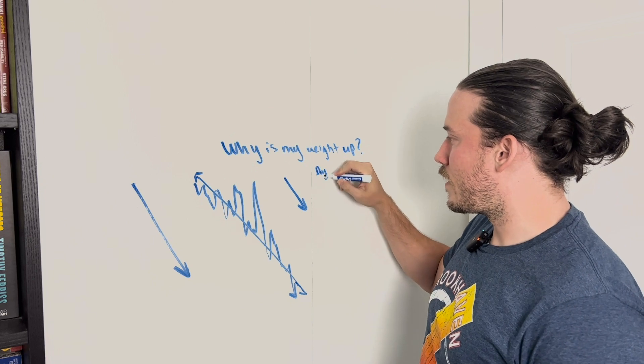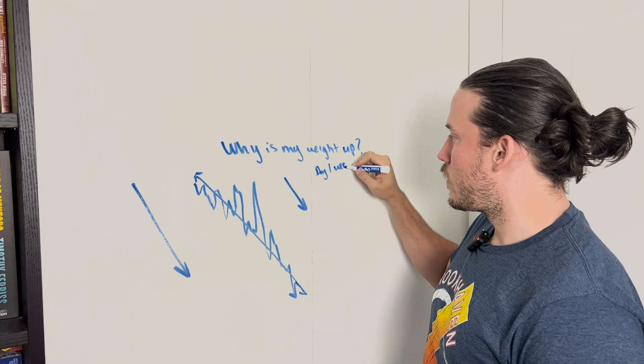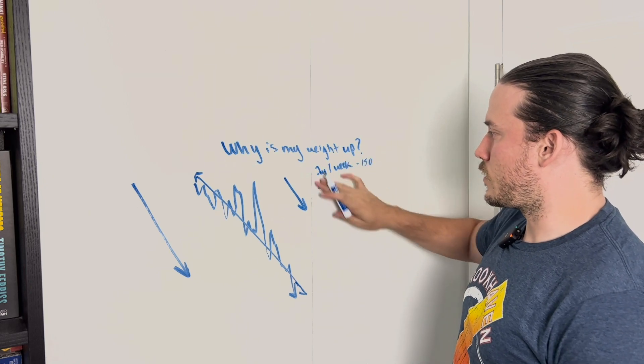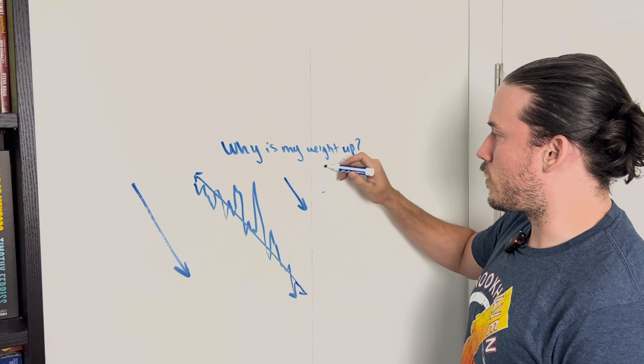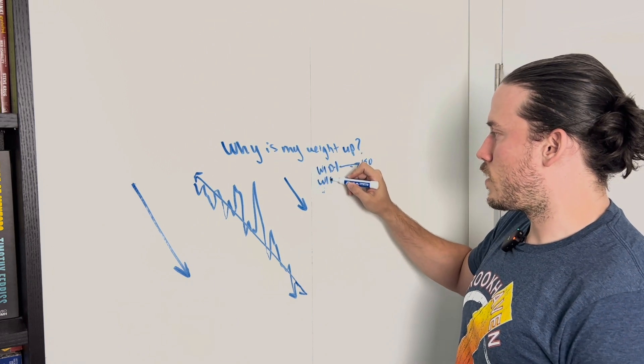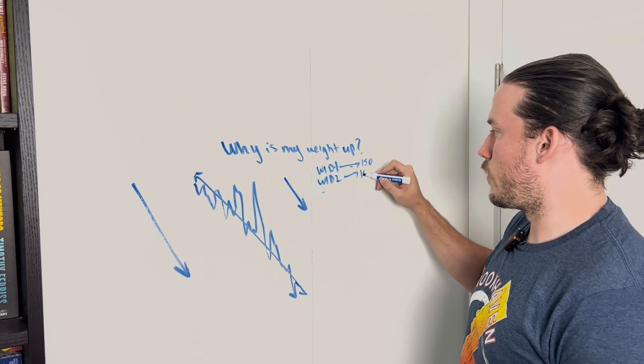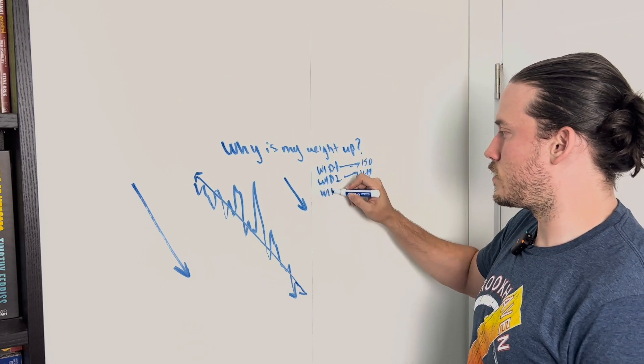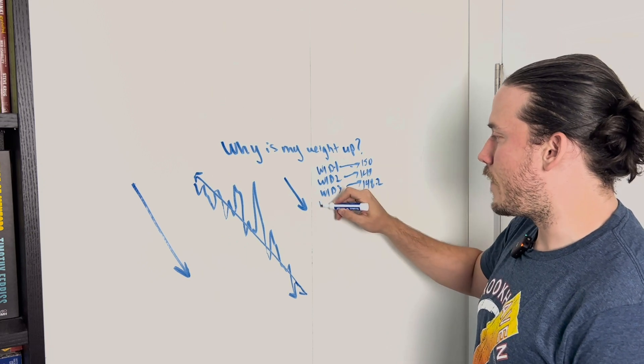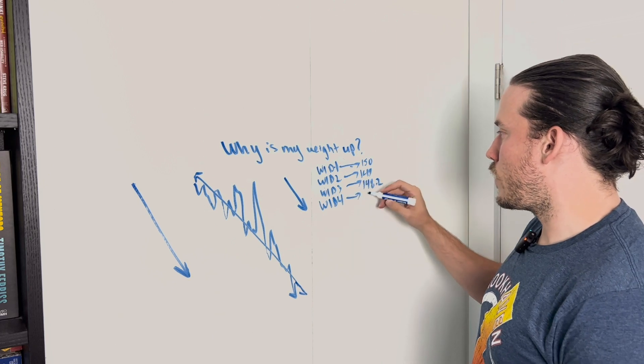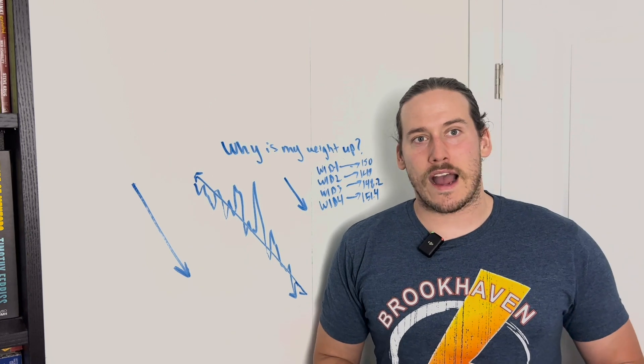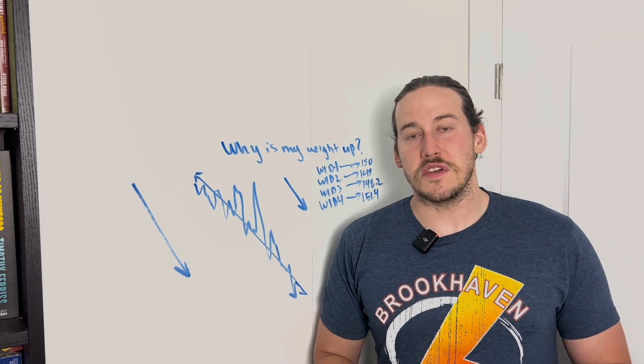So, you know, it's day one, week one. Maybe day one, week one, we weighed 150. Week one, day two, we were 149. Week one, day three, 148.2. And then week one, day four comes around and we are 151.4. Watch out. Our progress is over. We can't do it anymore.